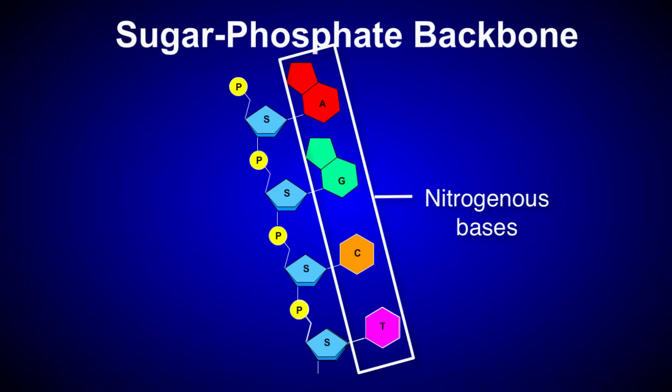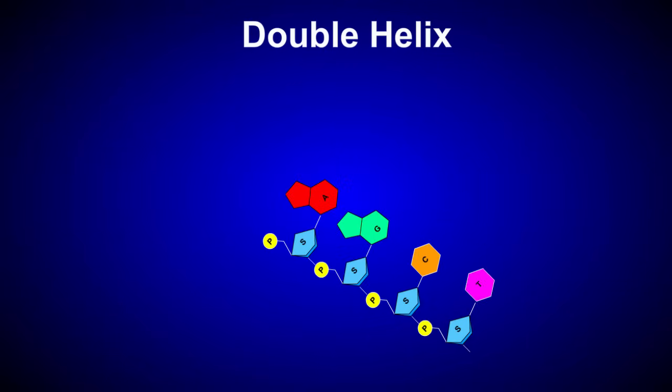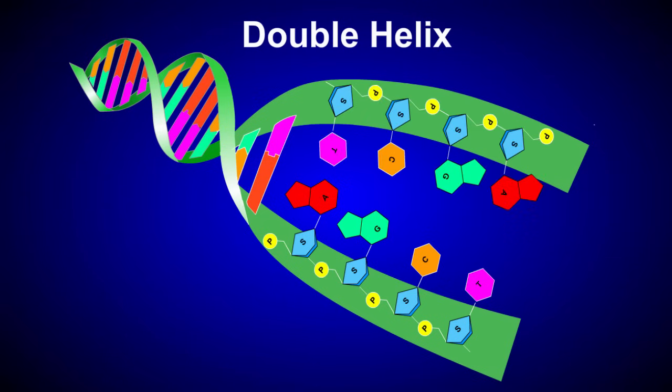Notice how the nitrogenous bases project to one side of the backbone. DNA is composed of two strands arranged as a right-handed helix. The strands are also anti-parallel, meaning that they are oriented in opposite directions.